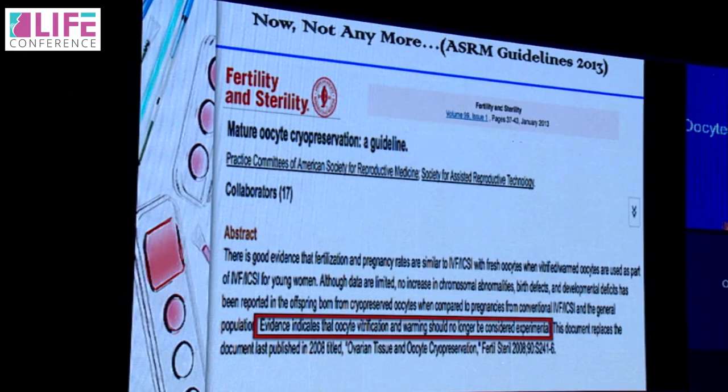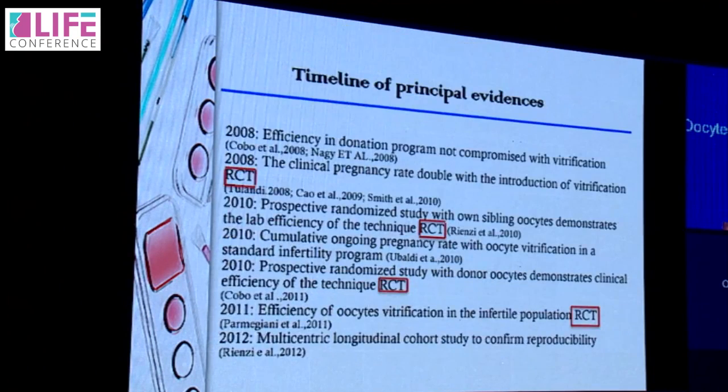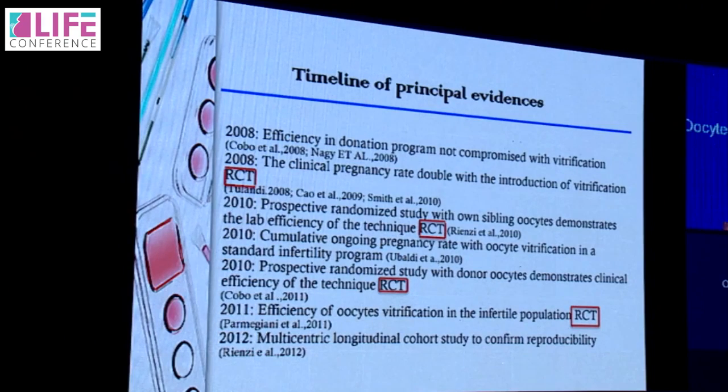ASRM declared oocyte vitrification as no longer experimental in 2013, based on a lot of evidence in the literature starting from 2008, including many randomized controlled trials — a very high level of medical evidence. Notably, ICSI and embryo cryopreservation were introduced into clinical practice without any randomized controlled trials, yet we now have so many such studies for oocyte vitrification, and all this data made ASRM change its position.